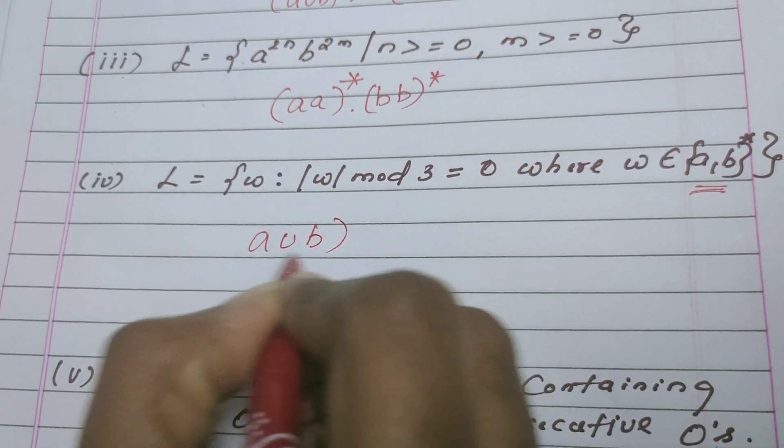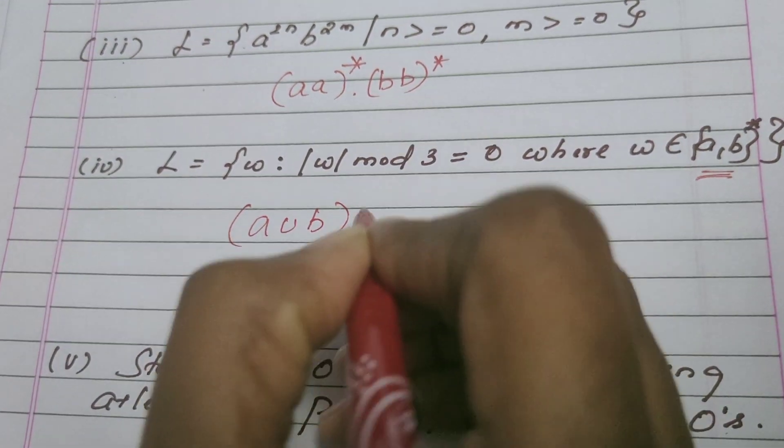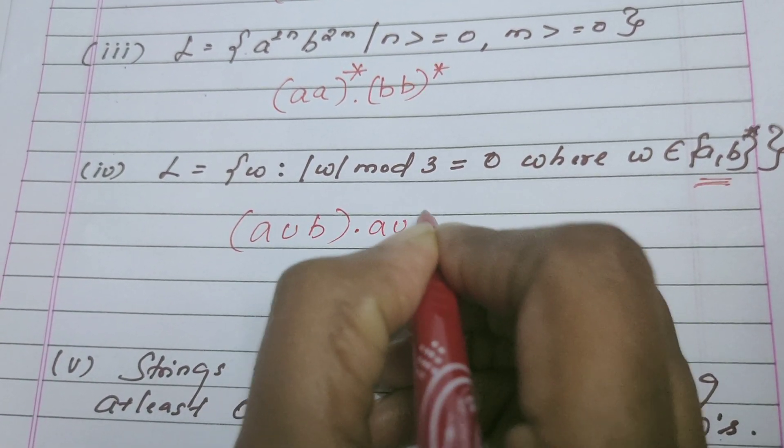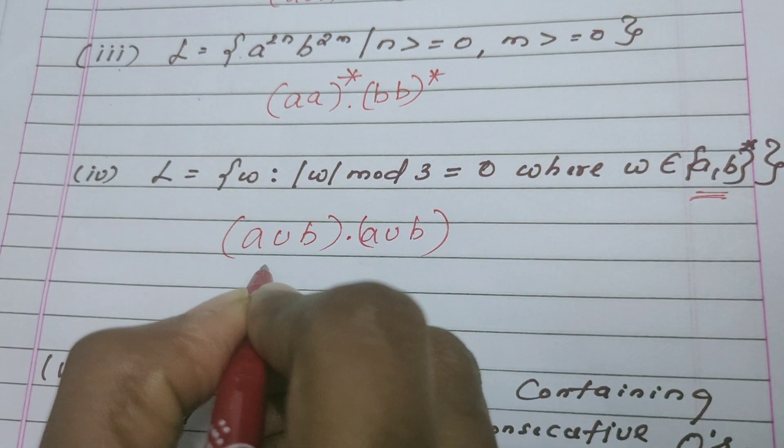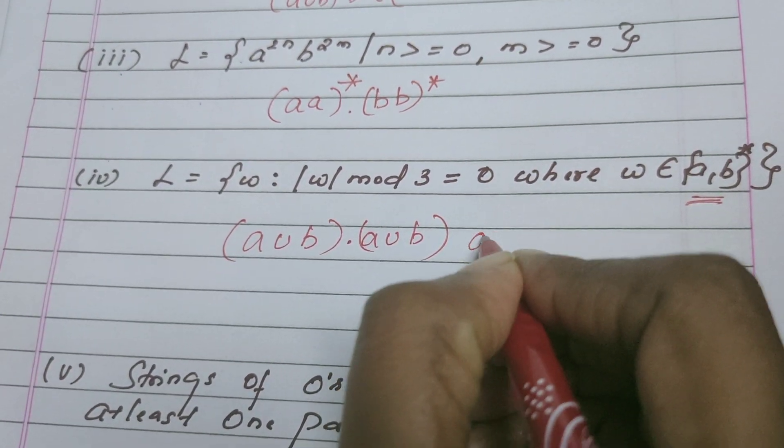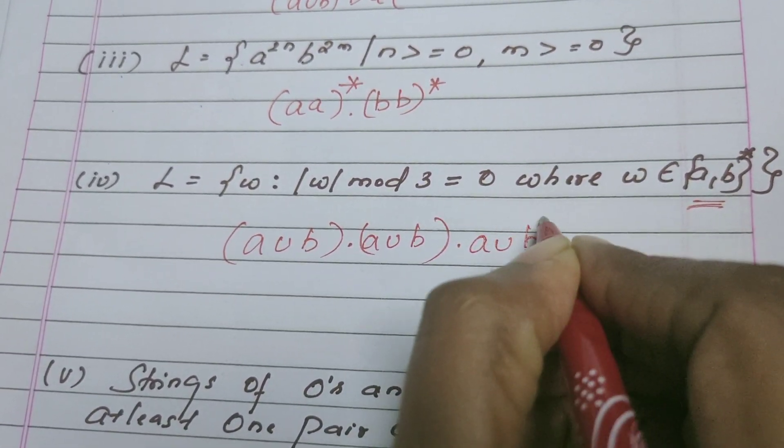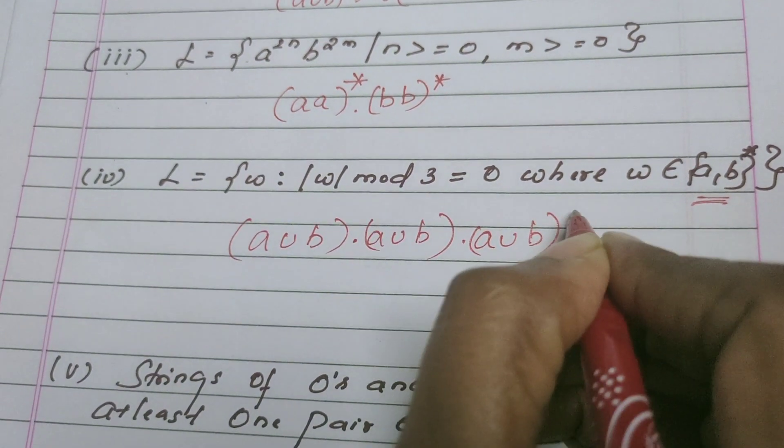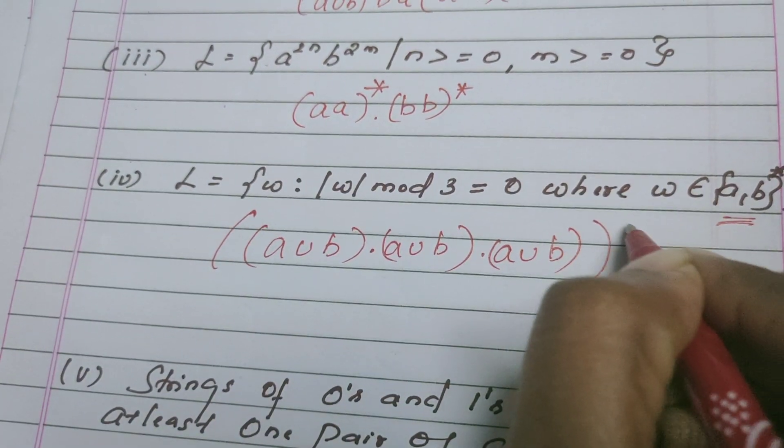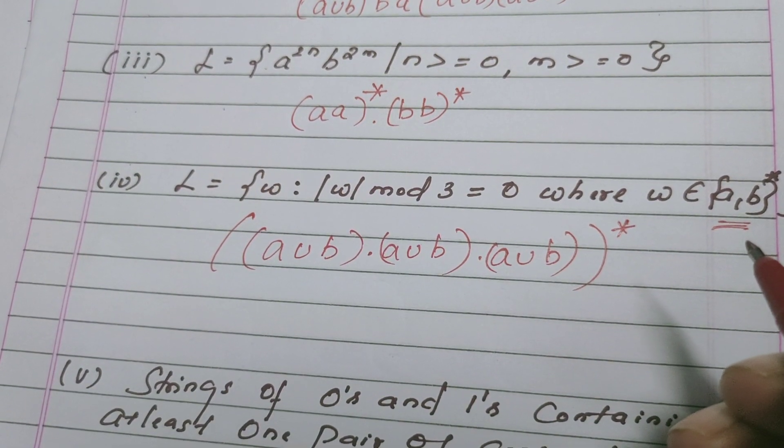This A union B generates string of length 1. If you concatenate further by A union B, as of now it generates string of length 2. Till this it generates string of length 3. Put a whole star, it will generate string of length 3 and multiples of 3. That's it.